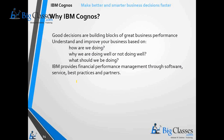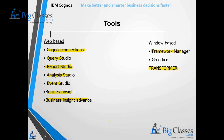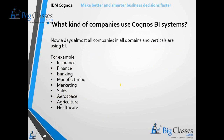IBM provides financial performance management through software, services, best practices, and partner channels. Almost all companies and almost all domains nowadays are using IBM Cognos for their reporting needs.